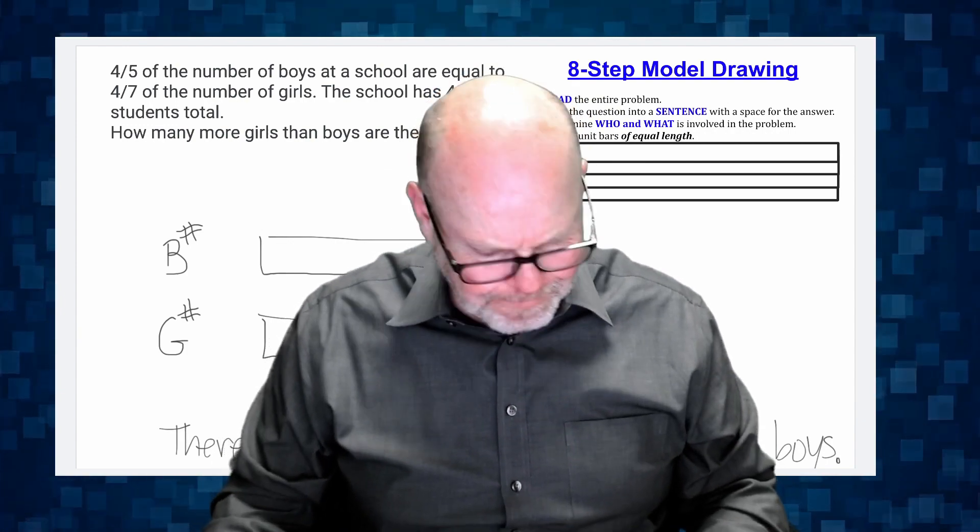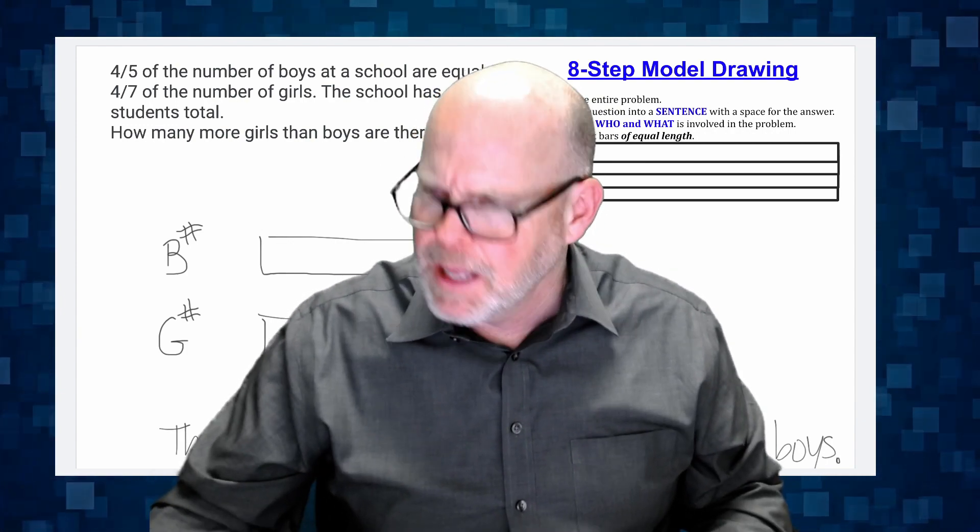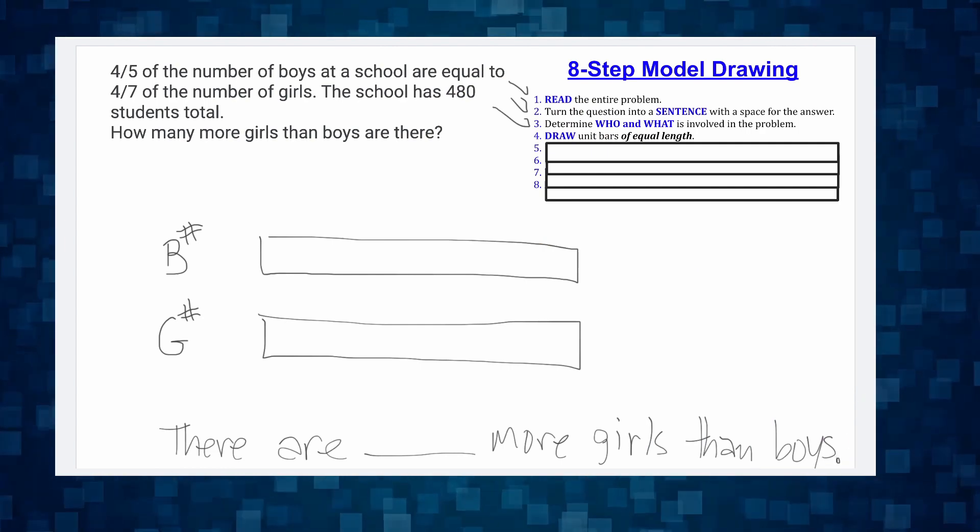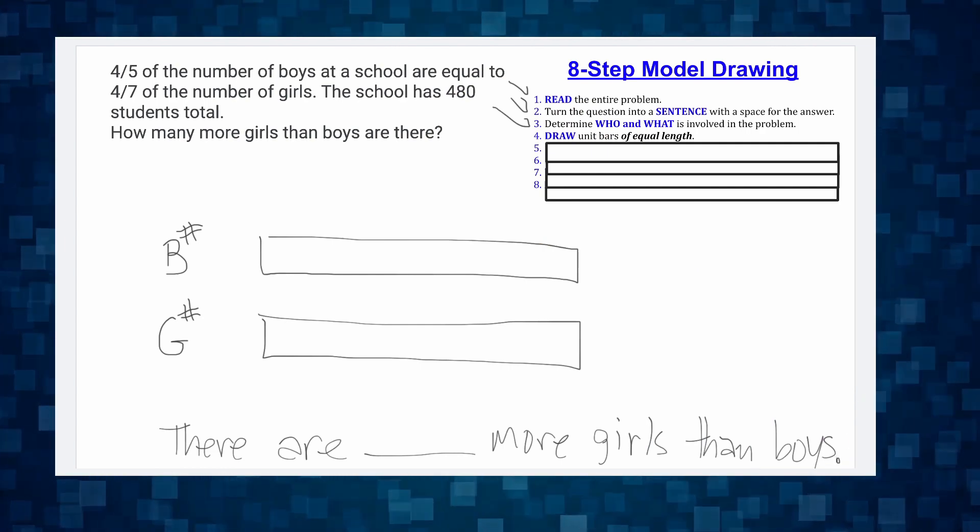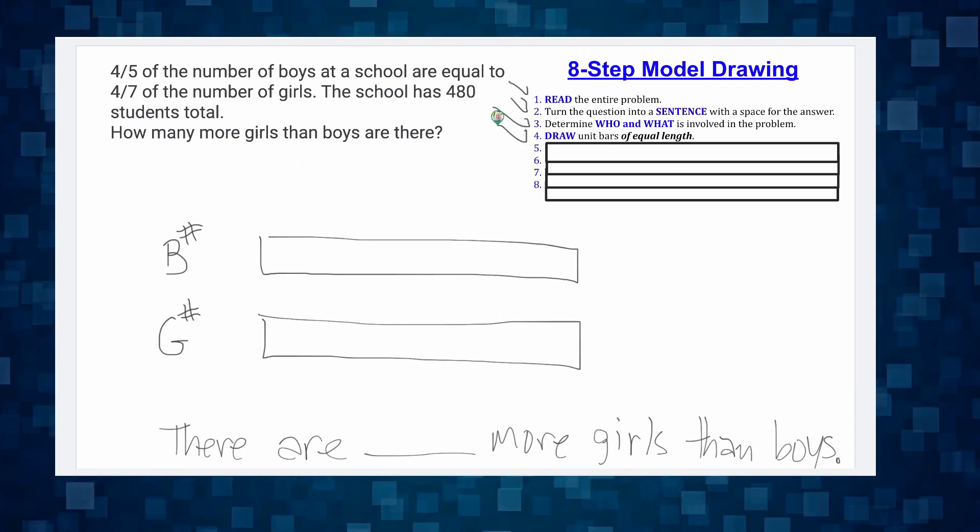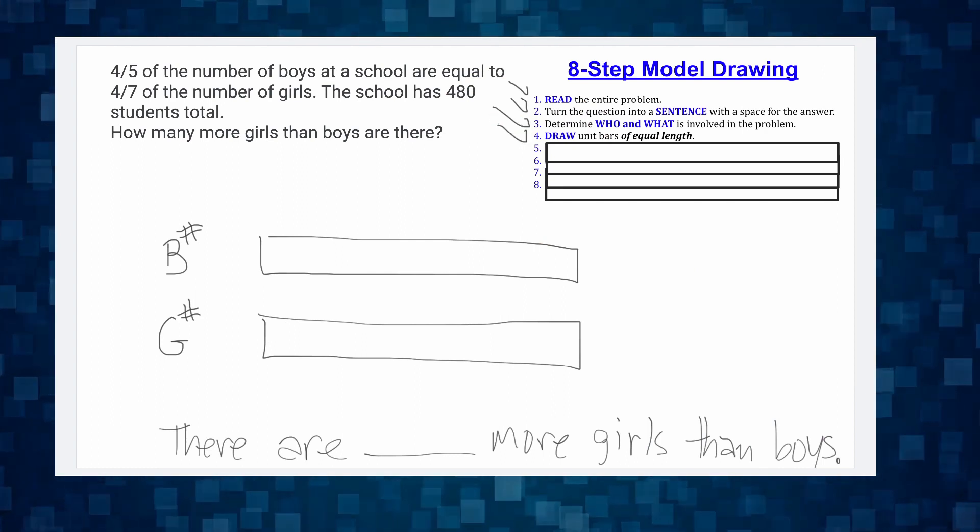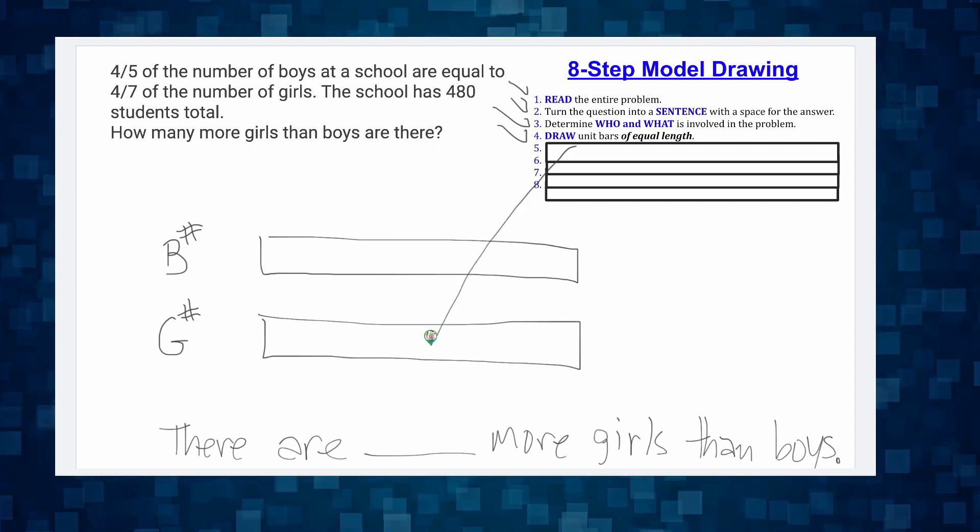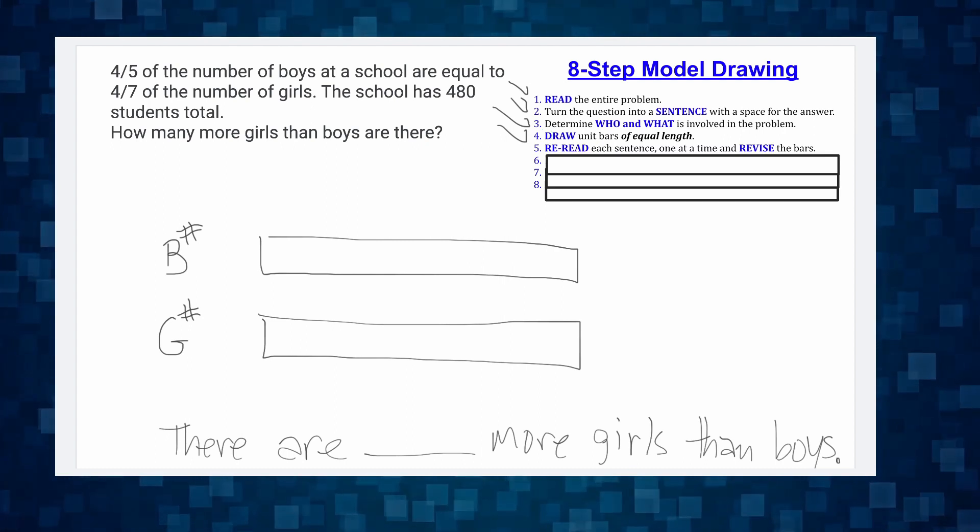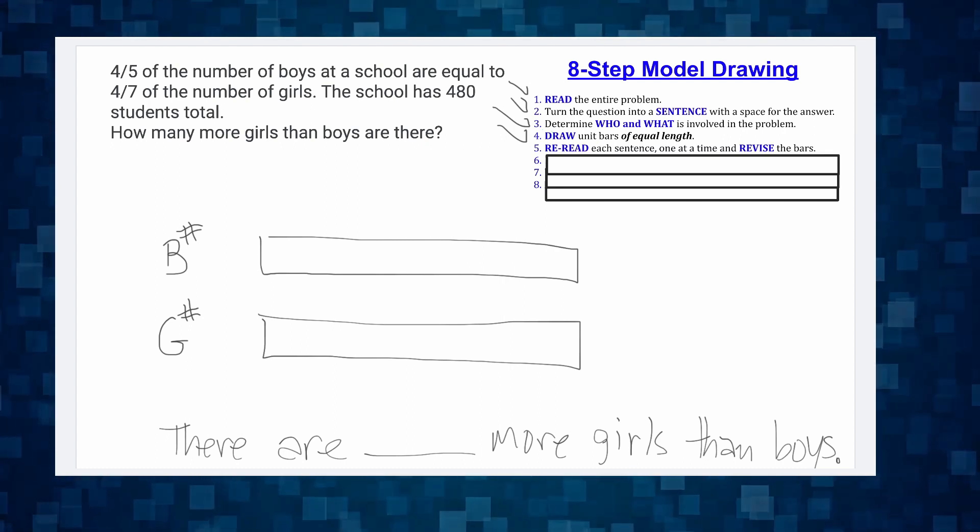I'm going to get myself out of the way again. Step four, draw bars of equal lengths. Done. Now we're on step five. Step five is now reread each sentence one at a time and revise. So let's go back.